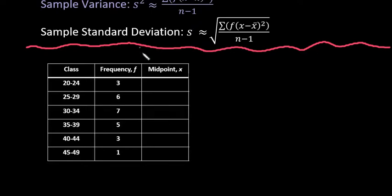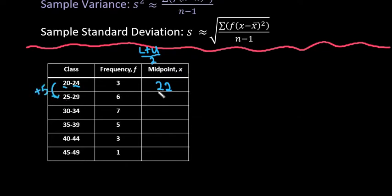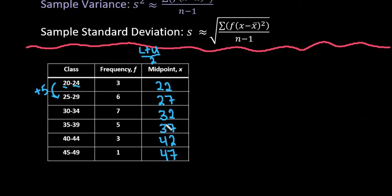To find the midpoint, take your lower class limit plus your upper class limit and divide by 2. So I'll take 20 plus 24, which gives me 44, divided by 2 gives me 22. For the next class, 25 plus 29 divided by 2, or since each class width is 5 I can just add 5 each time: 22, 27, 32, 37, 42, and 47. Always verify that your midpoint falls between the two class limits — all of these look accurate.